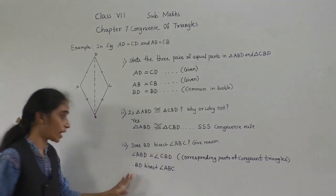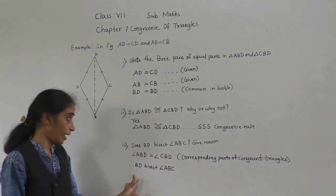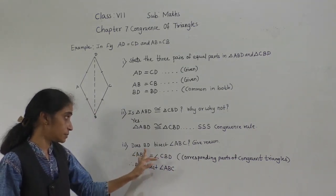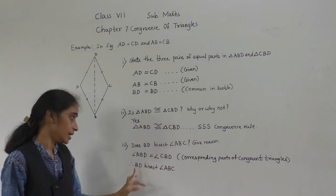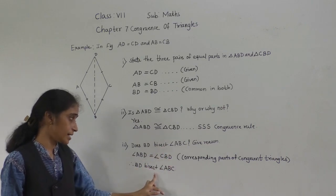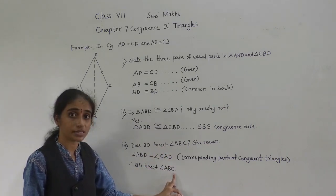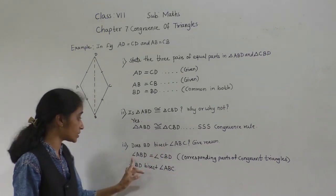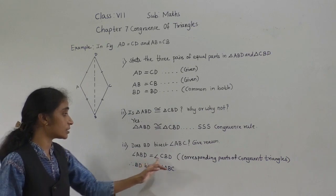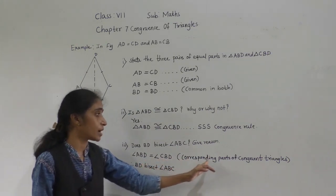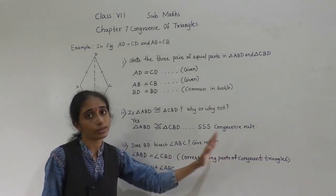Therefore, BD bisects angle ABC. Why? Because these are the corresponding parts of the congruent triangles — angle ABD equals angle CBD, so BD bisects angle ABC.